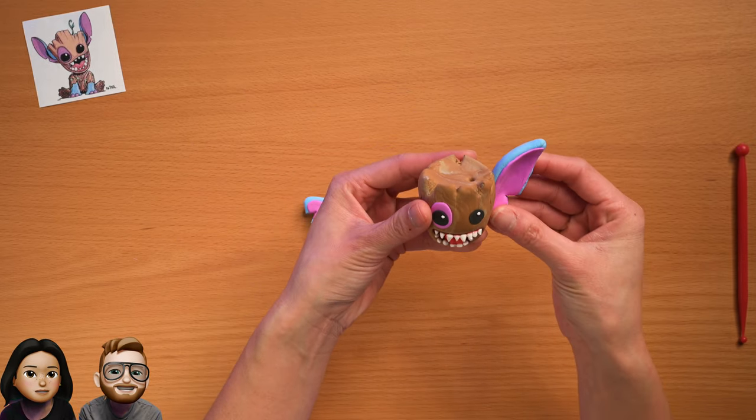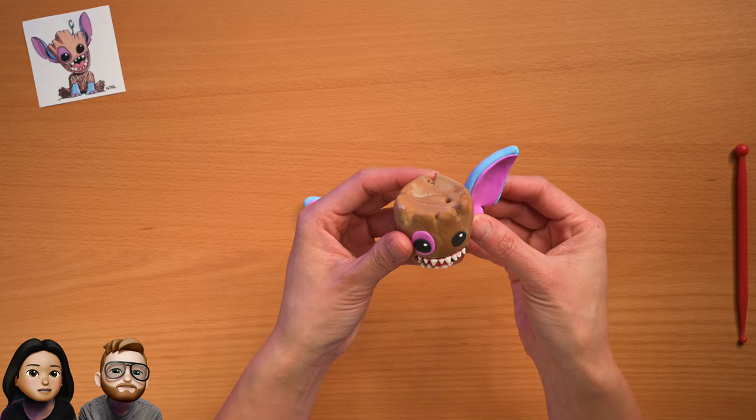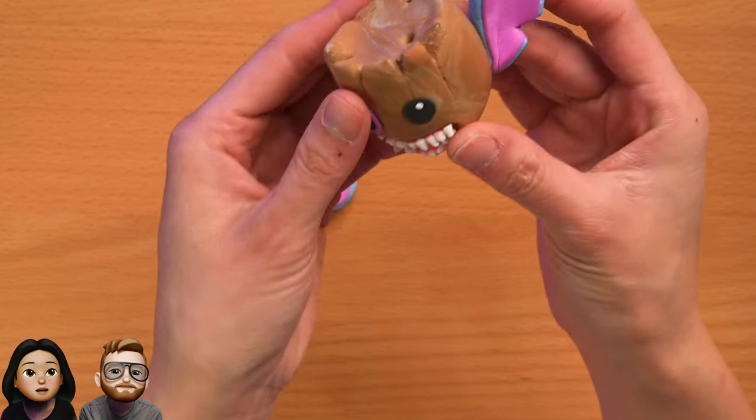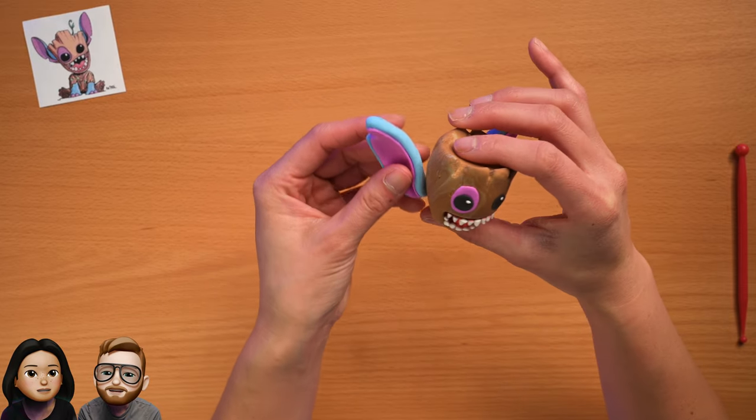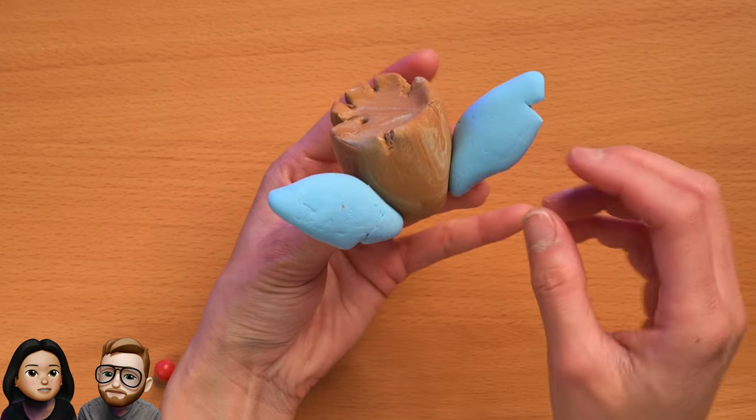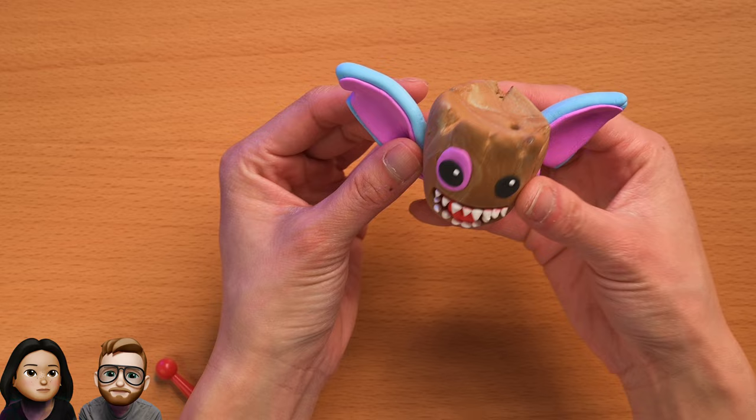And then I'm going to use a little bit of water to stick on his ears. Since they're so big and floppy, I don't want them to fall off. Yeah, water acts like glue. If you haven't used air dough before, if you just use a little bit, it'll help you stick everything together.